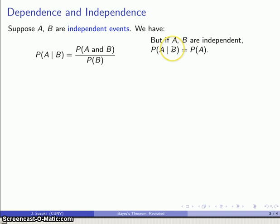In other words, knowing that B has occurred leads to no change in the estimate of our probability. So this probability of A given B is just the probability of A. And now, again, nobody likes fractions, so I'll multiply across.